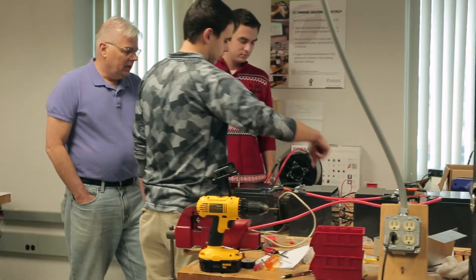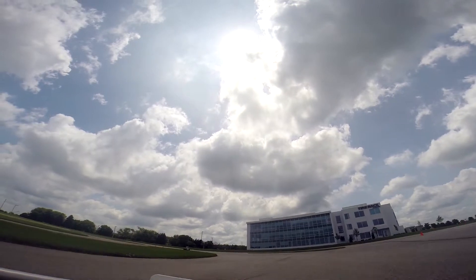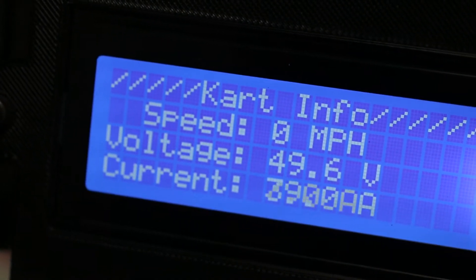There are two main reasons why we wanted to redo the electronics. The first was to switch from lithium-ion batteries to lead-acid batteries for the reason that it's much simpler to manage the batteries. And the second reason is to create a dashboard for the go-kart that will give us parameters such as speed, battery voltage, and battery current.